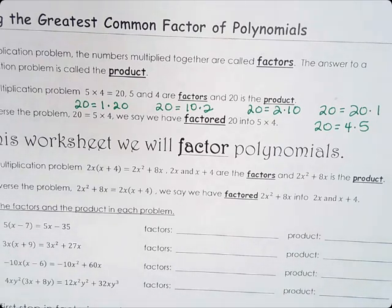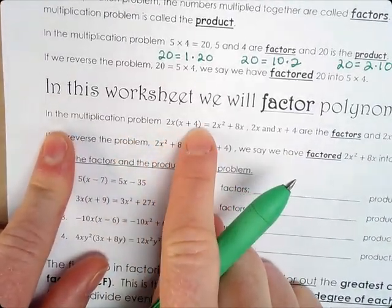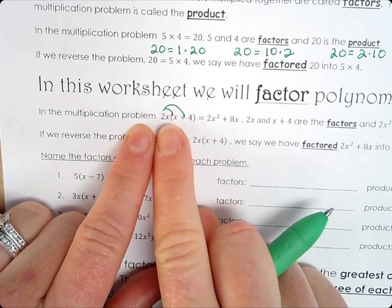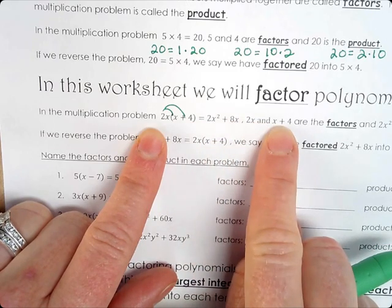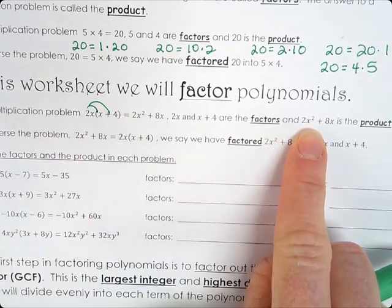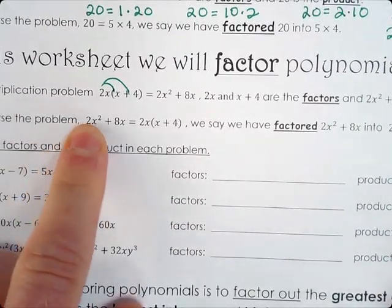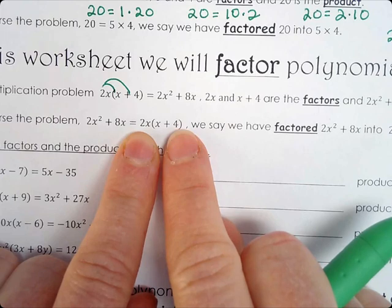Whenever we add a variable in there, we take out the greatest common factor, including the greatest common factor of a variable. In the multiplication problem 2x times (x+4), when we distribute, 2x times x is 2x squared and 2x times 4 is 8x. So 2x and (x+4) are the factors, and the product is 2x squared plus 8x. We could reverse the problem and factor it by looking for the greatest common factor, then putting parentheses around what is left after dividing by that factor.